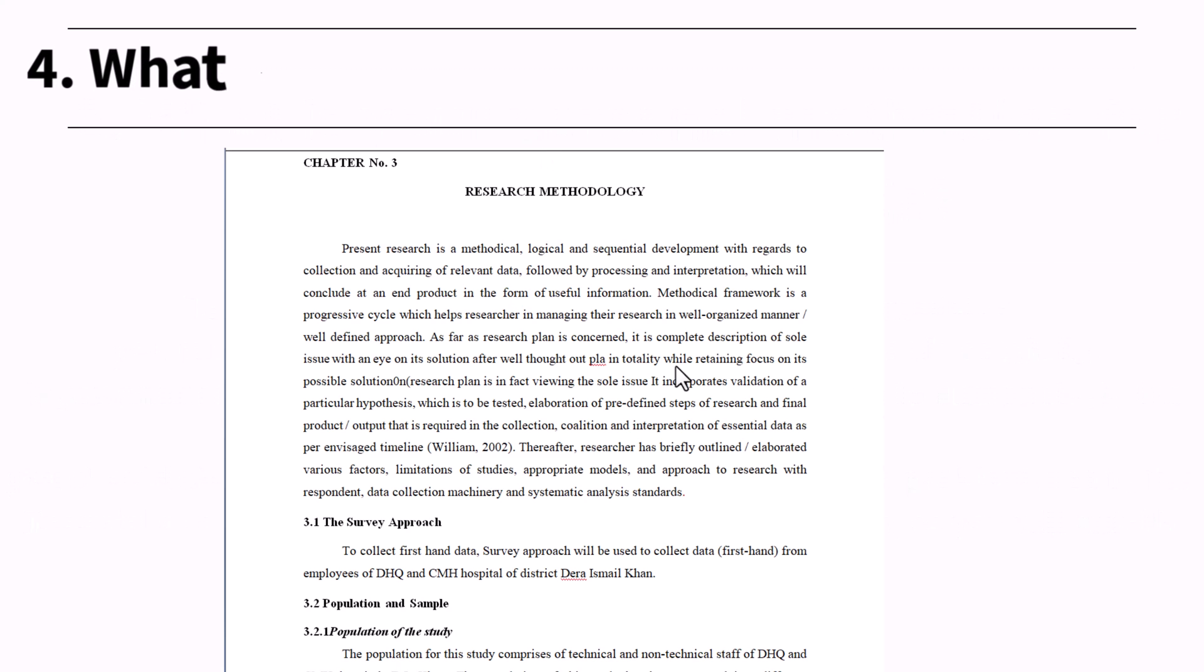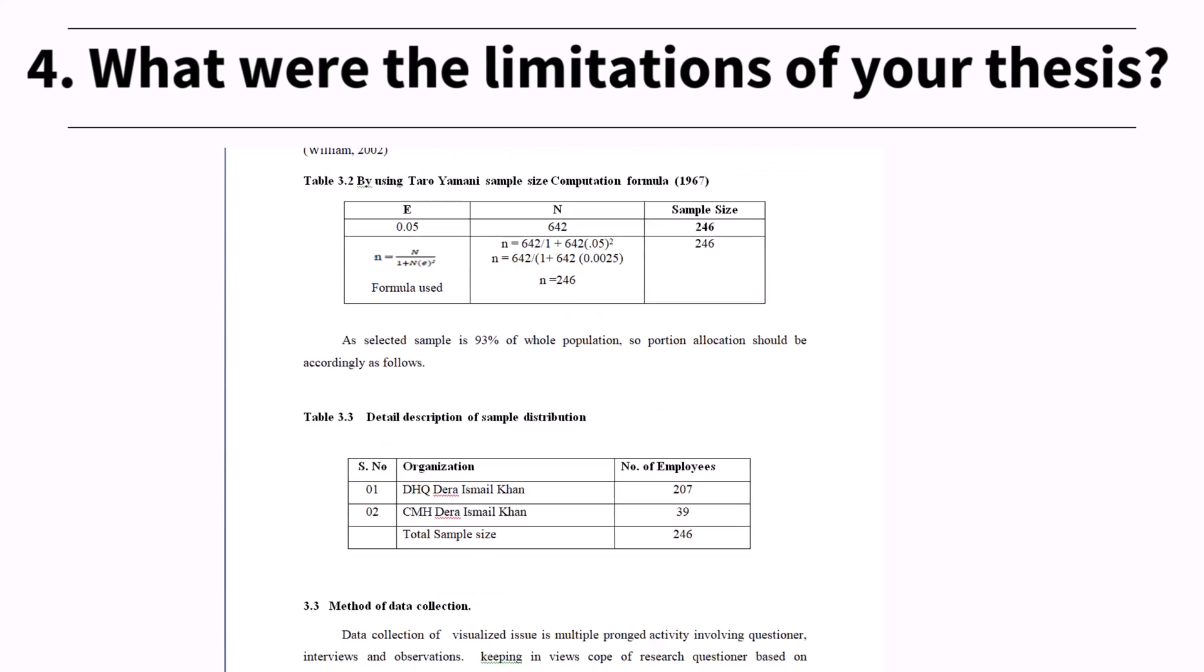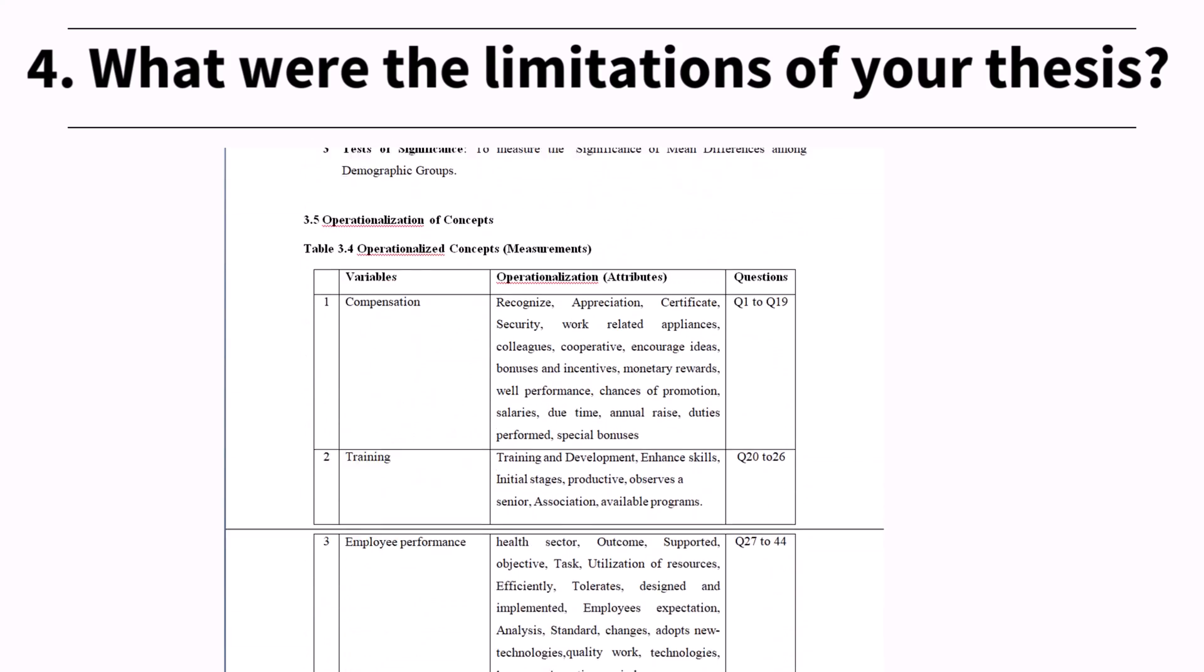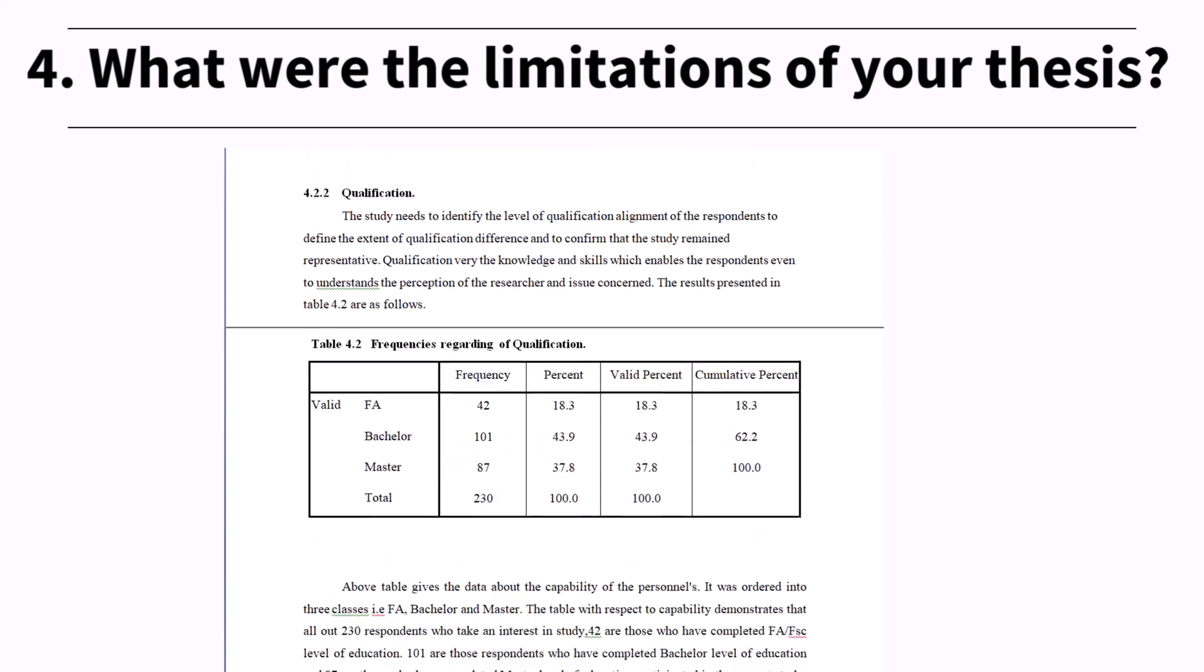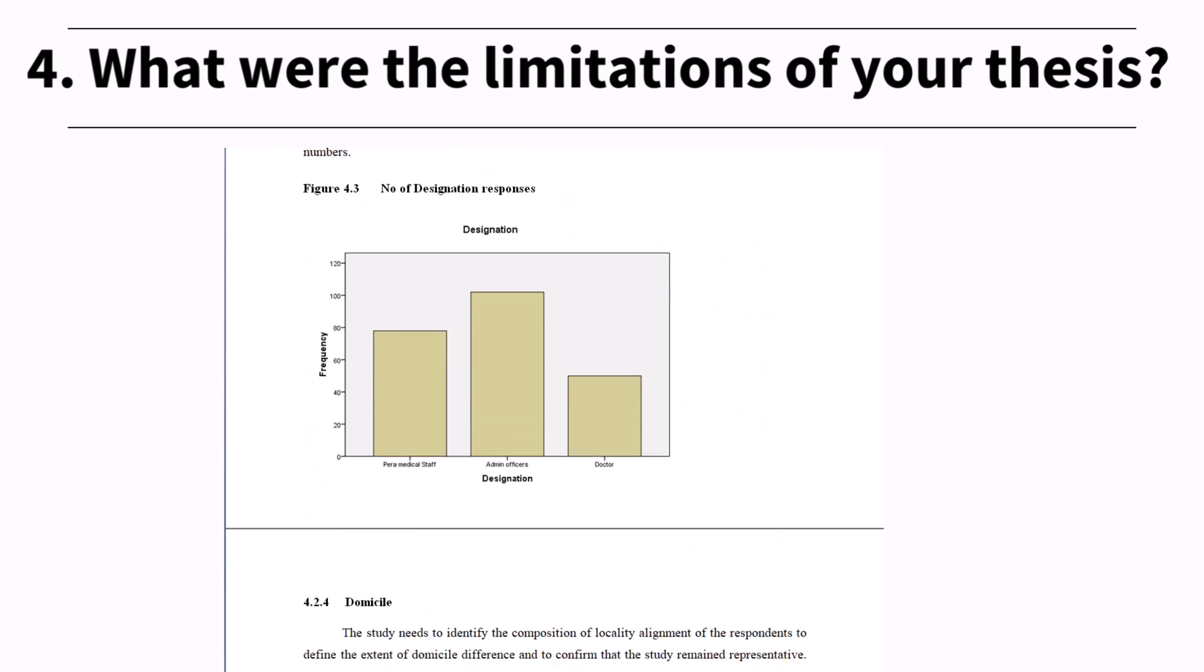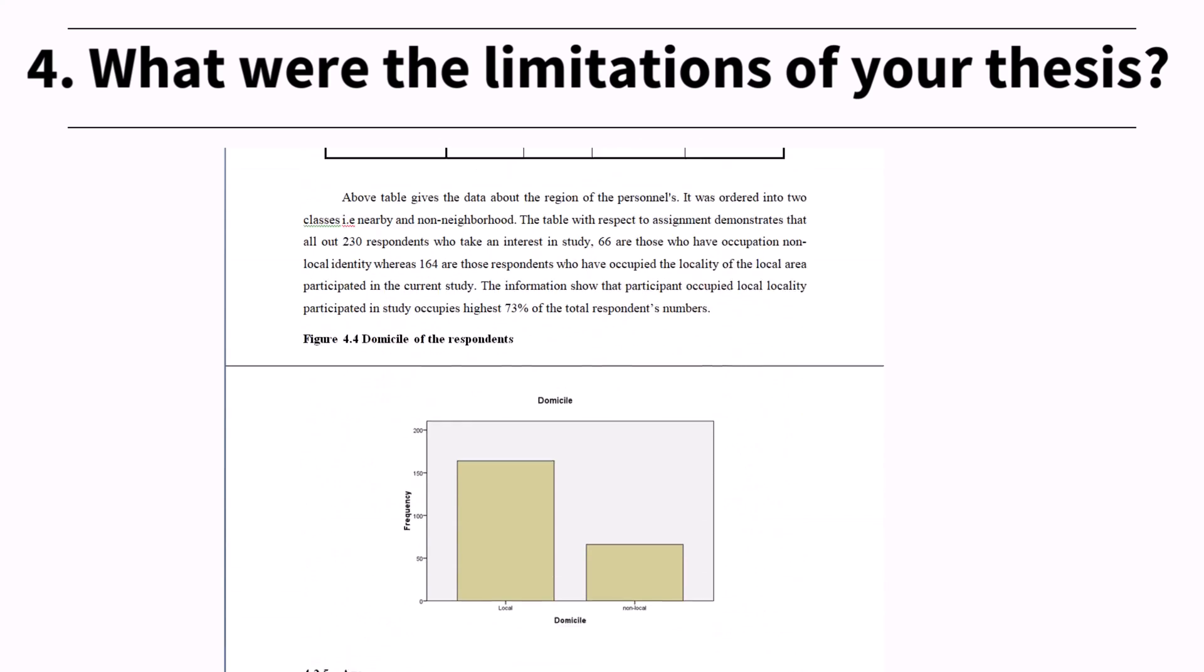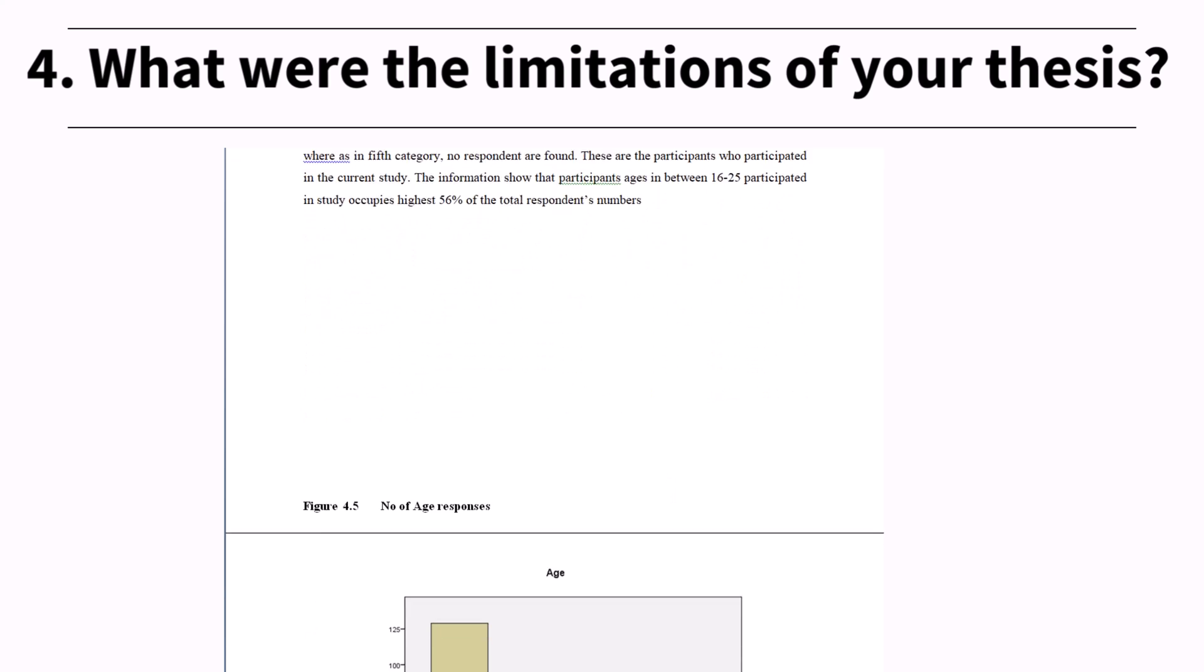4. What were the limitations of your thesis? Another complex question that necessitates knowledge and practice. Discussing limitations in your methodologies or data analysis approaches may suggest that your paper is biased or poorly researched. Rather than restricting your thesis, use minor constraints such as difficulty in mixing and correlating information.